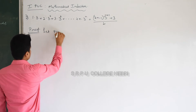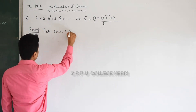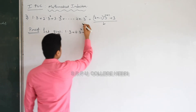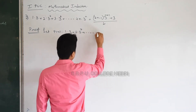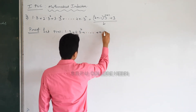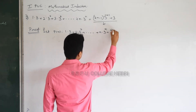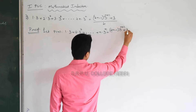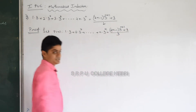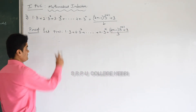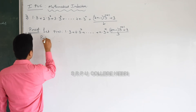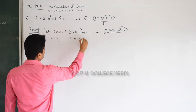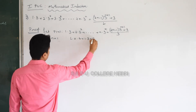As you know, the first step is to take the given statement as P of n. This is compulsory — if you don't write this in the exam, you will lose a mark. I am just writing the given question again, but still it is compulsory. Now put n equal to 1. LHS is always the first term: 1 into 3, which equals 3.